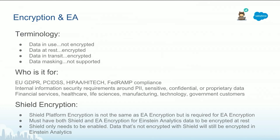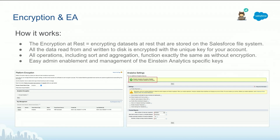The next topic is encryption. Encryption at rest is available, but you do need Shield. If you have Shield, you automatically have the option to encrypt datasets in Einstein Analytics — the datasets are encrypted at rest with a separate key. When you have Shield, you can go and create keys to encrypt the datasets and manage those keys. For example, if today you have a key and you encrypted 10 datasets, then during the week you only used five and you changed the key, the old key is still there so you can decrypt the old datasets when you access them, and then they will be re-encrypted with the new key.